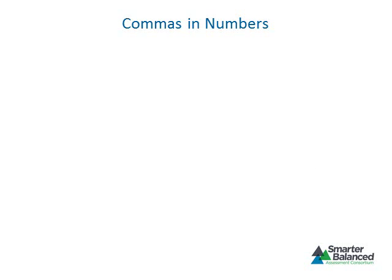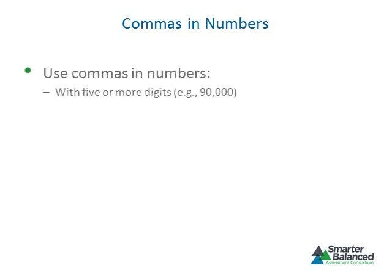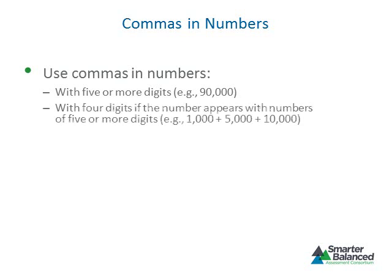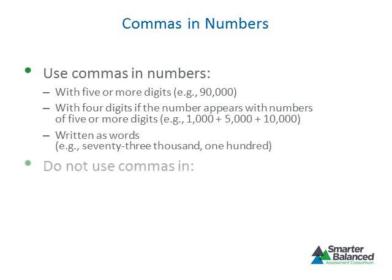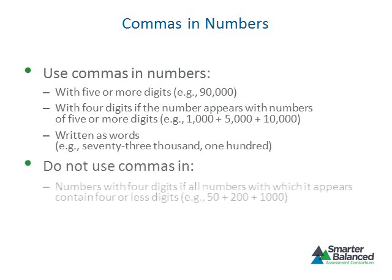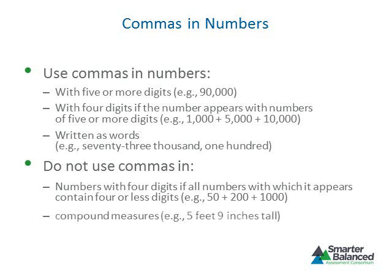For all grades, there are rules that must be followed when using commas in numbers. Use commas in numbers with five or more digits, numbers with four digits if the number appears with numbers of five or more digits, and numbers written as words. Do not use commas in numbers with four digits if all numbers with which it appears contain four or fewer digits, or in compound measures.